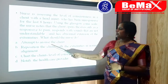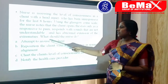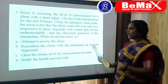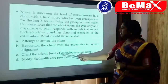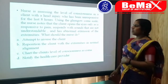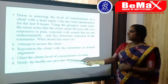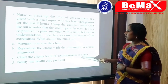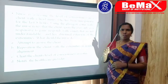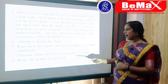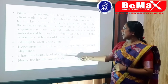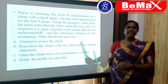Moving on to the options. Option C is correct: chart the client's level of consciousness as coma. Because the patient's GCS score is 6, the patient is in coma, and the nurse can accurately chart the patient's level of consciousness as coma. That is the correct answer.